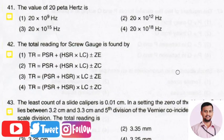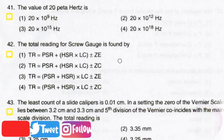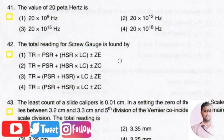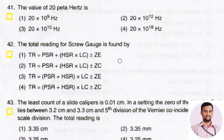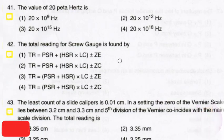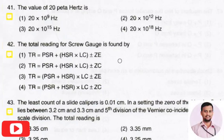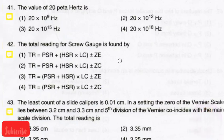Hello my dear students. In Diploma CET, questions will be asked in three different sections: Mathematics, Applied Science, and the Mainstream section, which is specific to your particular branch. The Mathematics and Applied Science sections are common to all branch students, and the same questions will be asked for all students in these sections.